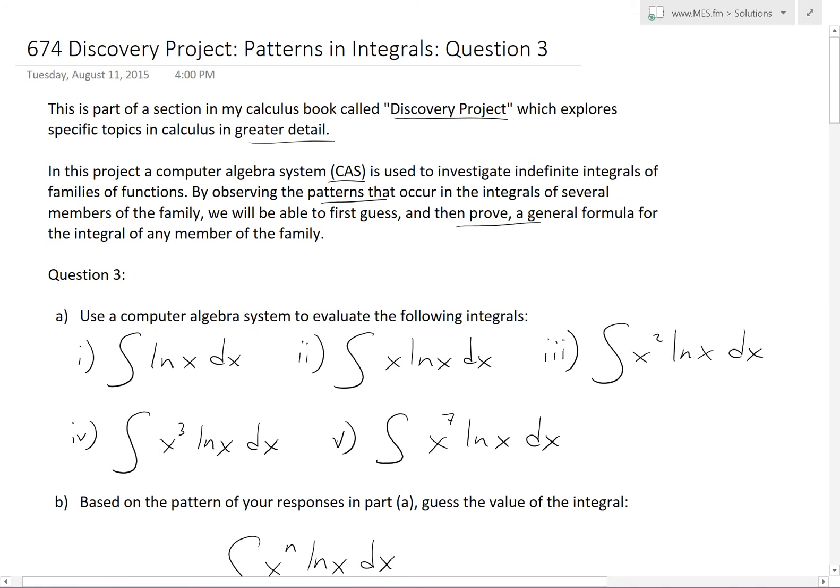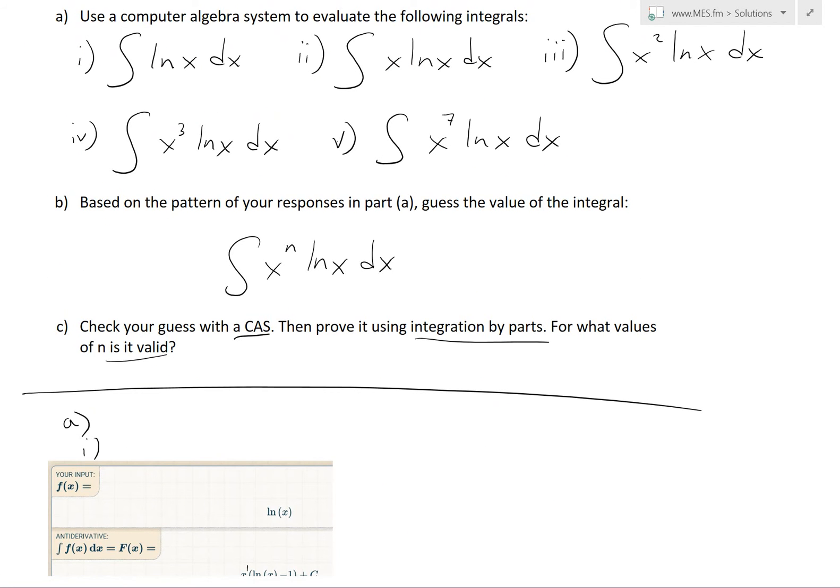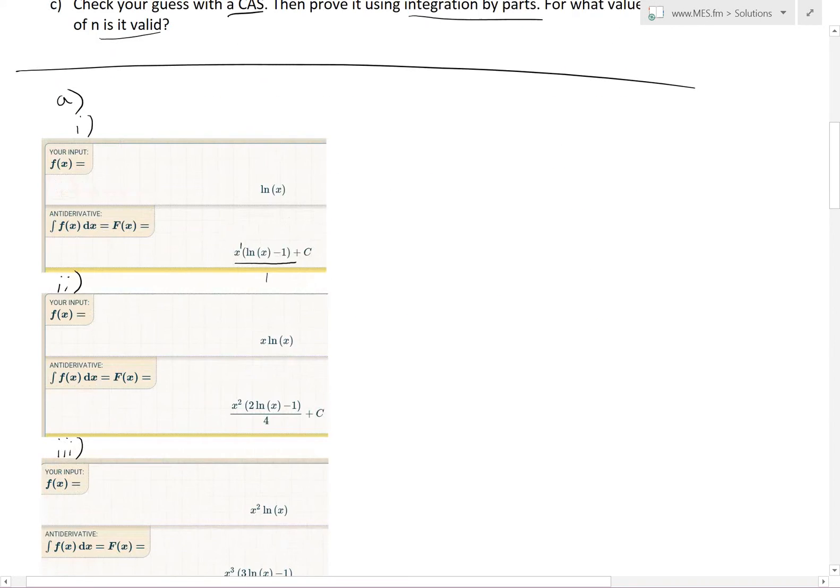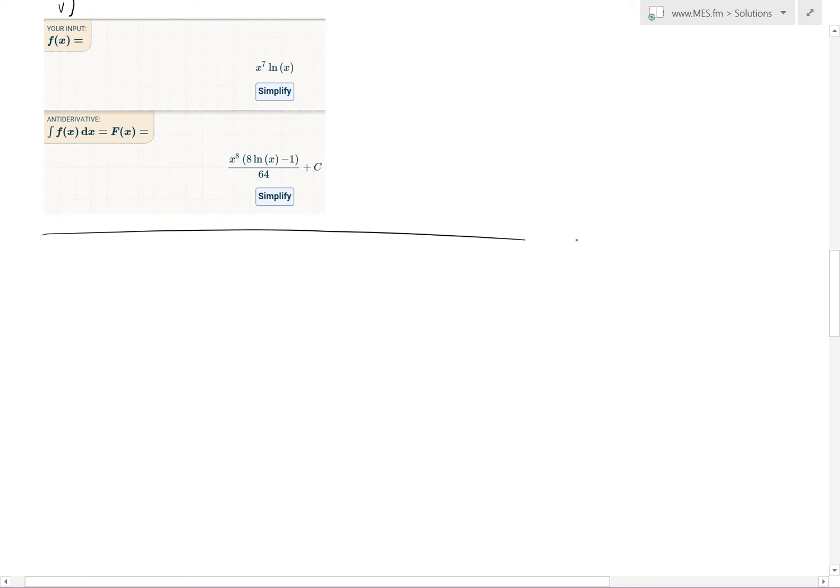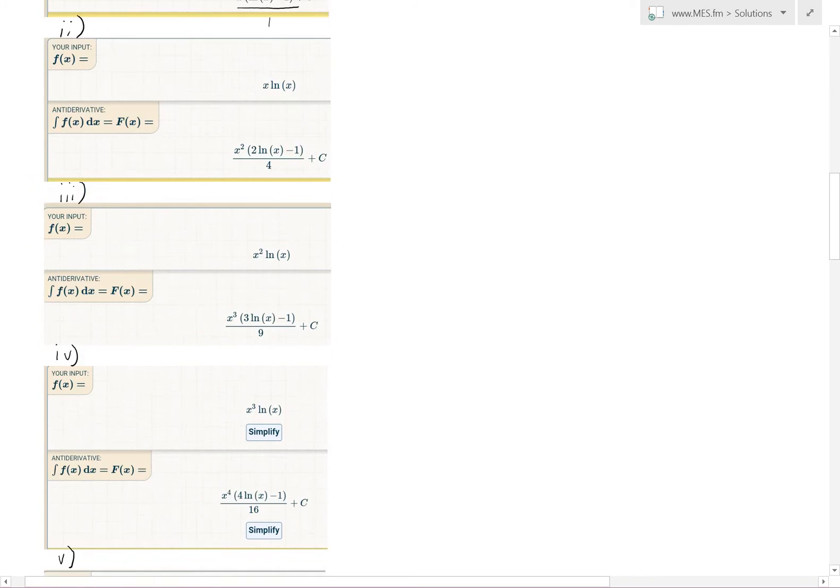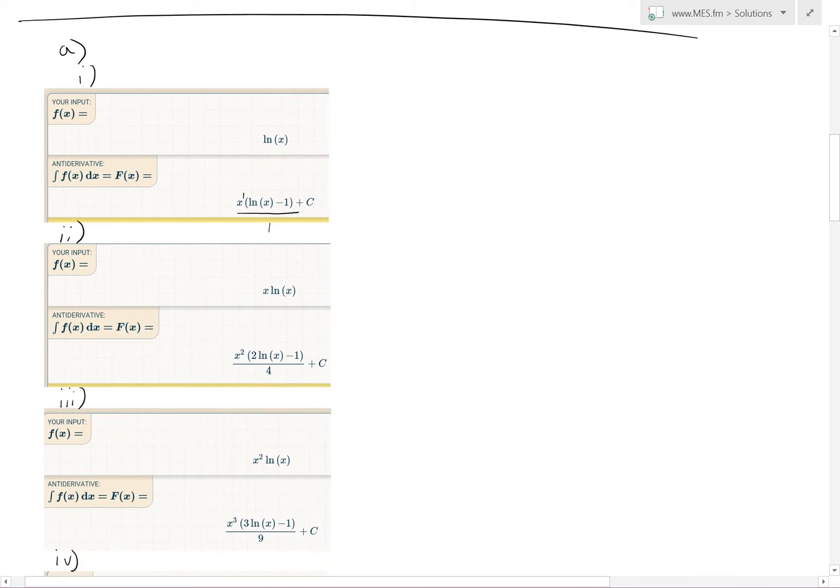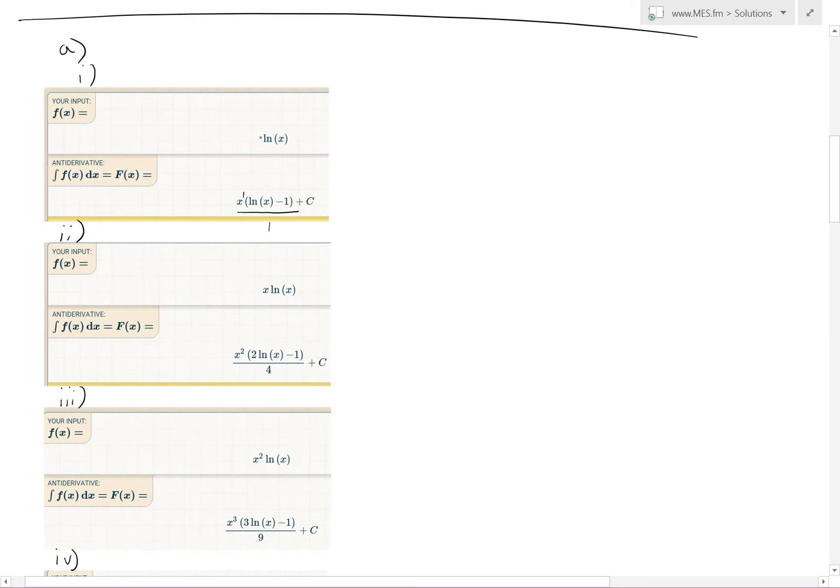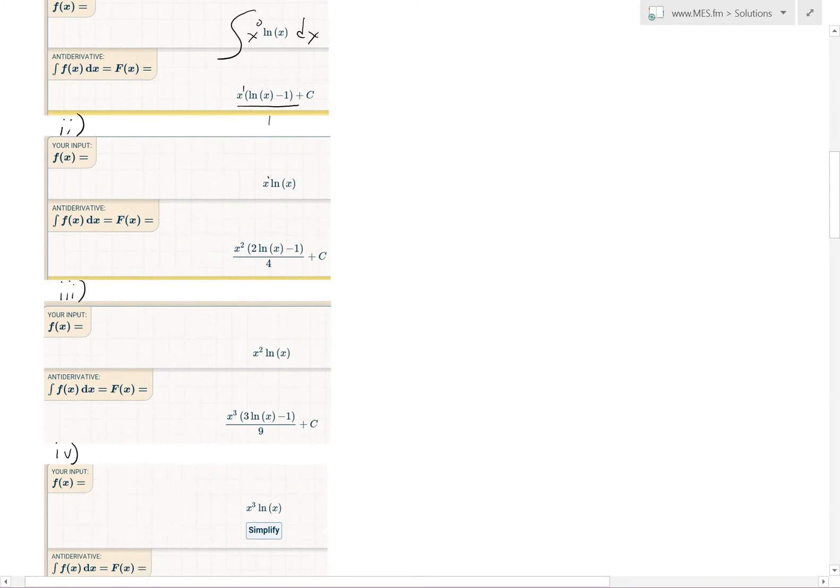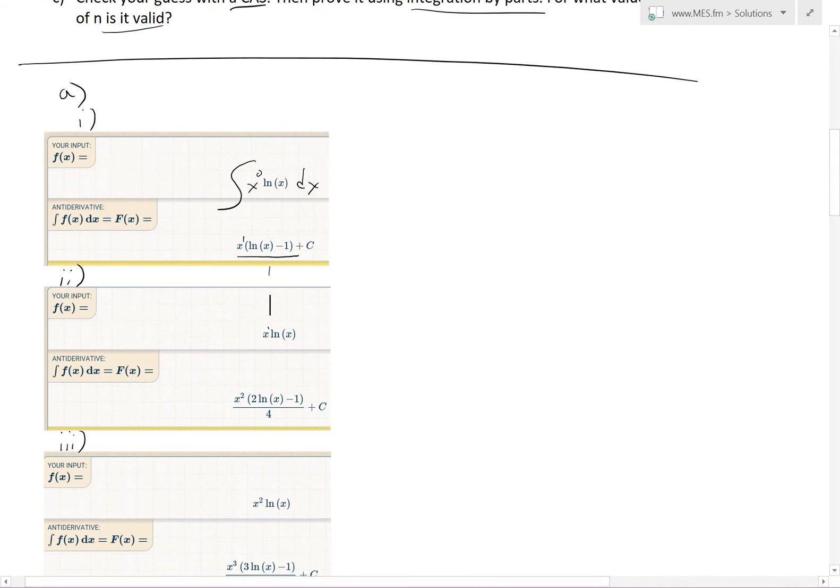So let's look at part B right now. So we've solved all those based on the pattern of response to part A. Guess the value of xn ln x. So the general integral for this family of integrals. So let's go B, this is x power of n ln x dx. So let's look at these.